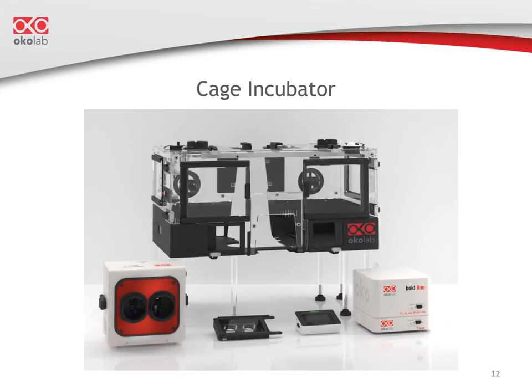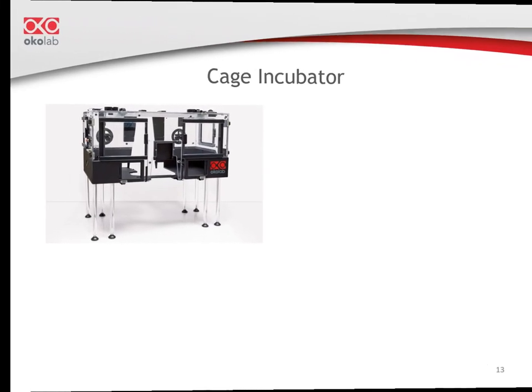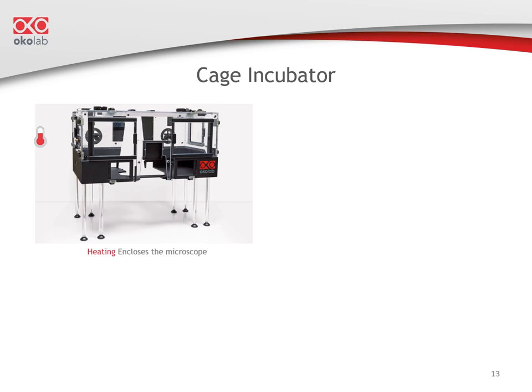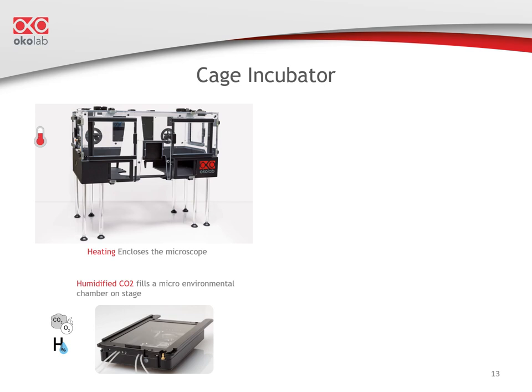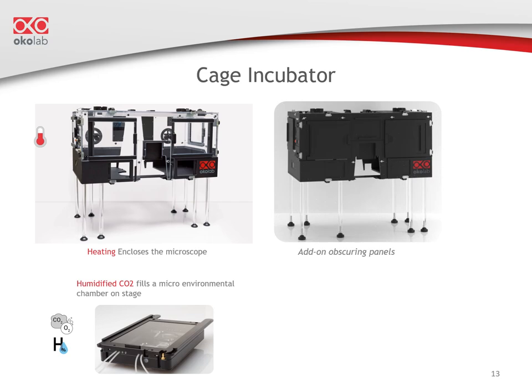Let's talk about cage incubation systems. Remember, in this case, heating encloses the microscope and the objective and nose piece are inside the enclosure at 37 degrees. The microenvironmental chamber containing the sample, located on the stage, prevents humidified CO2 from dissipating. We offer transparent enclosures — if needed later, you can add obscuring panels, select a black enclosure from the start, or even a black laser-safe one.